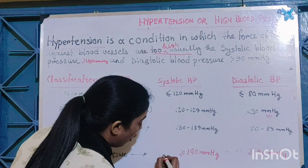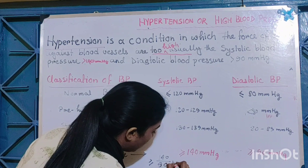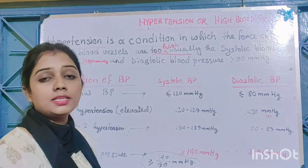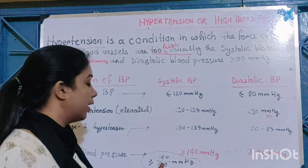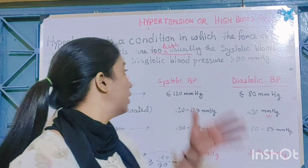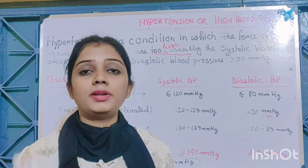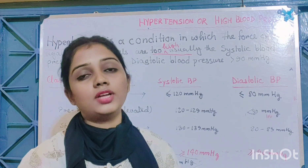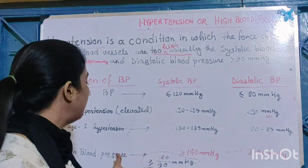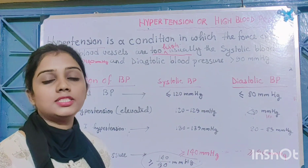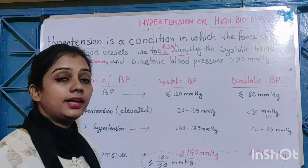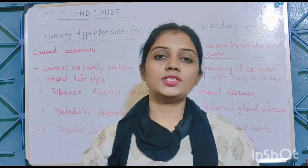In hypertension, blood pressure is greater than or equal to 140 by 90 mmHg. When our systolic blood pressure and diastolic blood pressure are both elevated above normal, the total blood pressure is high and it is called hypertension or high blood pressure.